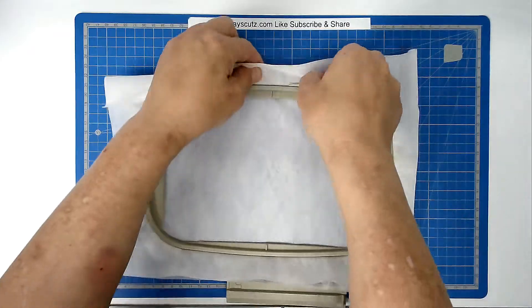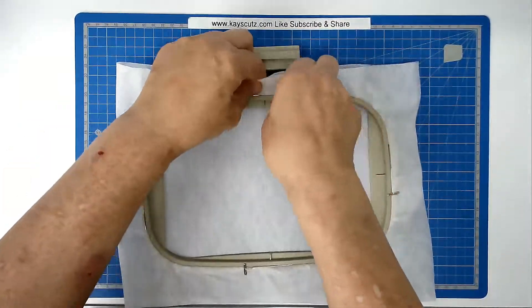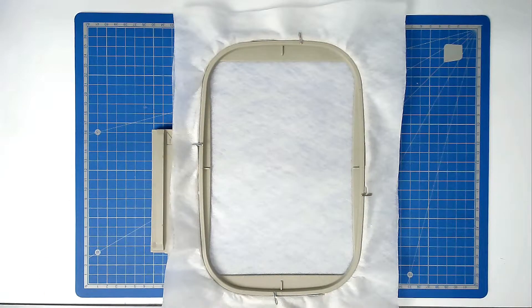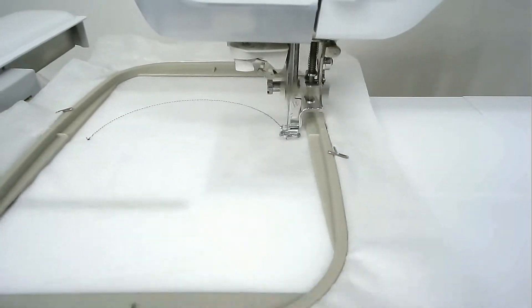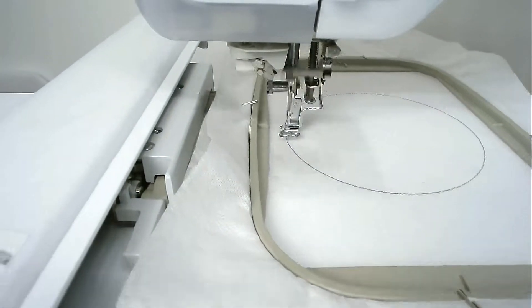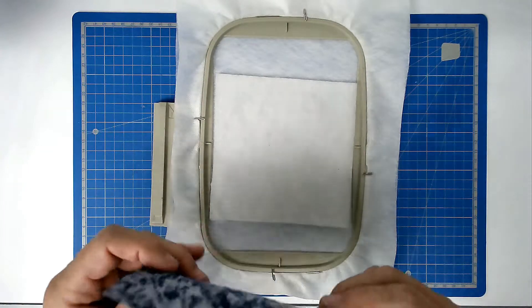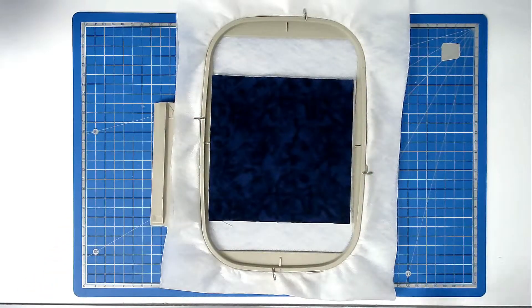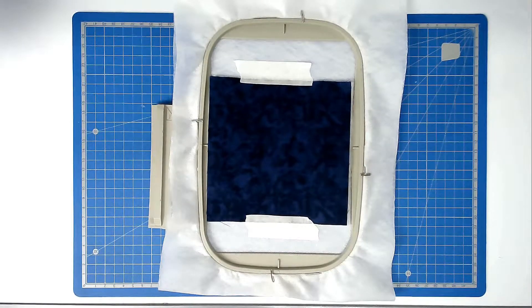Load your coaster file into your machine and then you're going to stitch round number one, and that's going to give your placement outline for your fabric and batting. Place your batting over the outline and then place your front fabric on top and tape it in place. Pop your hoop into your machine and stitch round number two.